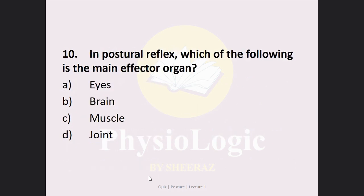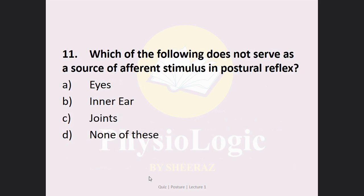MCQ number 10: In the posture reflex, which of the following is the main effector? Option A: eyes, Option B: brain, Option C: muscle, Option D: joint. The correct answer is Option C — muscle. MCQ number 11: Which of the following does NOT serve as a source of afferent stimulus in the posture reflex? Option A: eyes, Option B: inner ear, Option C: joints, Option D: none of these. The correct answer is Option D — none of these — because eyes, inner ear, and joints all serve as sources of afferent stimulus.